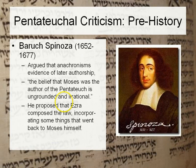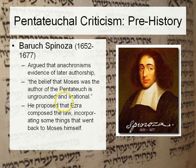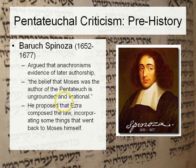Baruch Spinoza, a Jew living in the 17th century, argued that anachronisms are evidence of later authorship. He said, quote, 'the belief that Moses was the author of the Pentateuch is ungrounded and irrational.' He proposed that Ezra had composed the law, incorporating some things that went back as far as Moses himself.